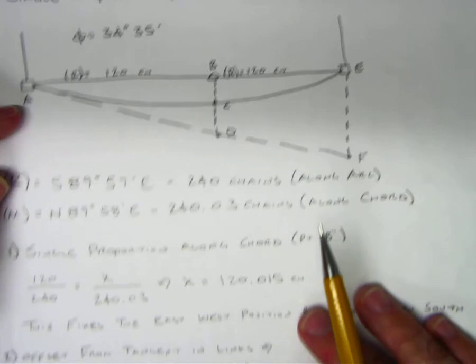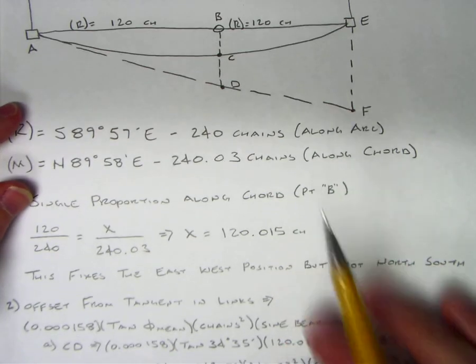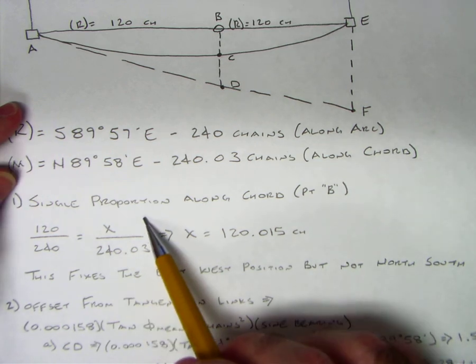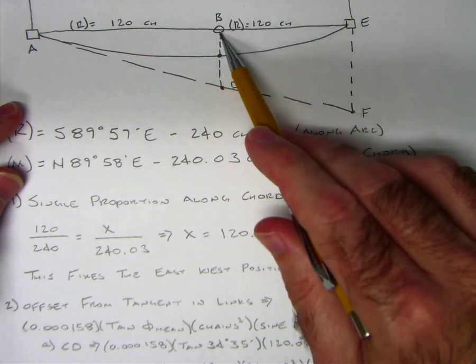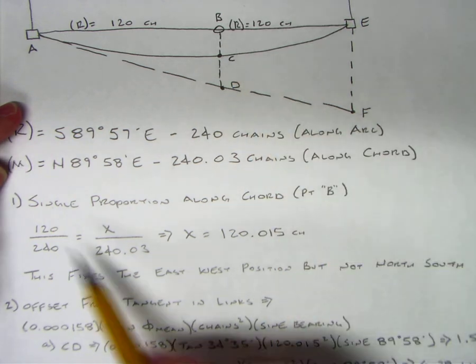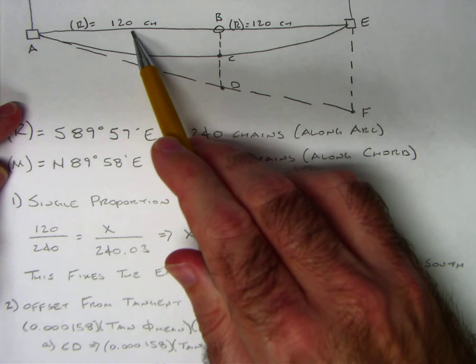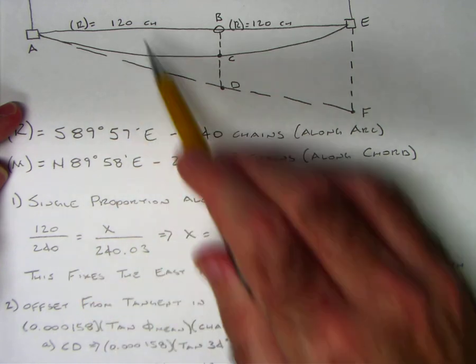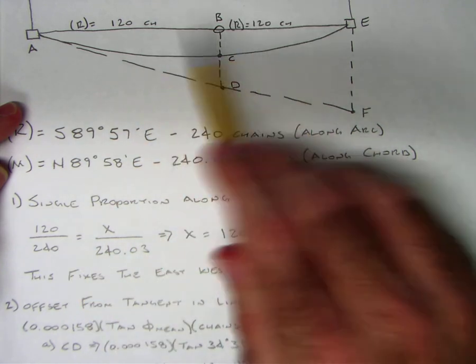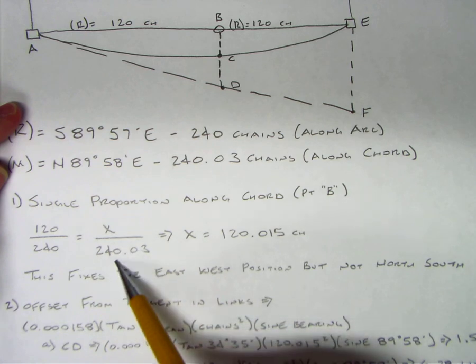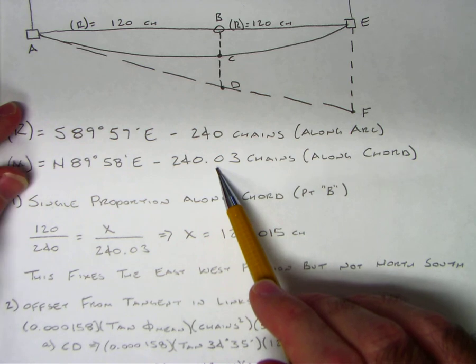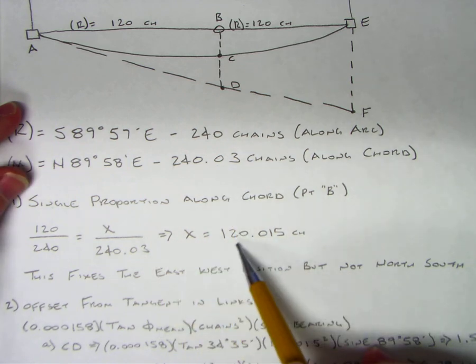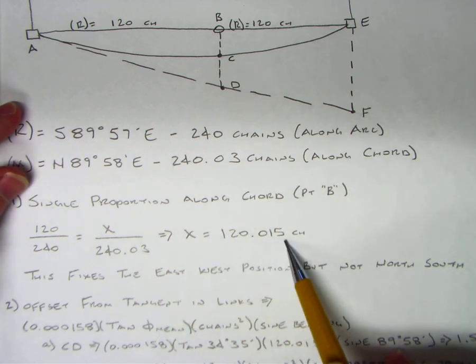We're going to set up a single proportion along the chord first at point B. So 120 is to 240 as x is to 240.03, which was measured along the chord. We get x equals 120.015 chains.